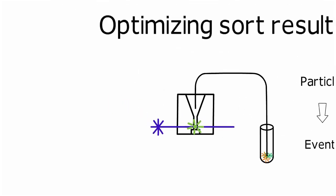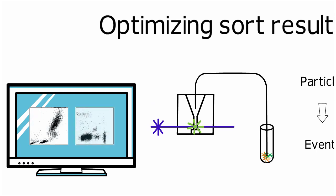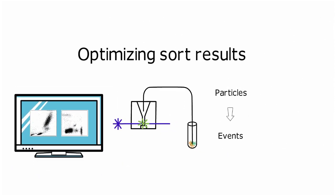Events that are above threshold and well separated from neighboring events are processed and displayed as data points in the acquisition software. This electronic efficiency can be influenced by the threshold level, window extension, and event rate.